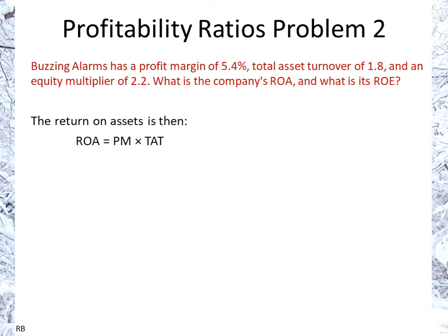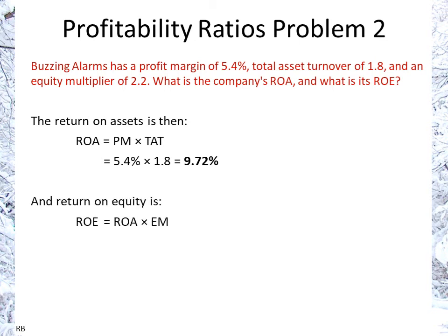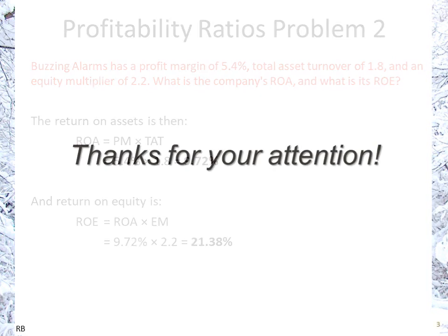So the return on assets will be profit margin times total asset turnover: 5.4% times 1.8 gives us 9.72%. And the return on equity is the return on assets times the equity multiplier: 9.72% times 2.2 gives us 21.3%. That's it — thank you for your attention.